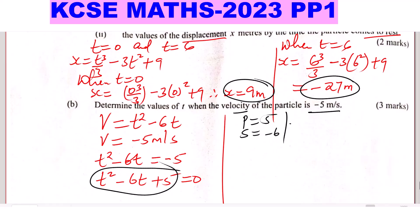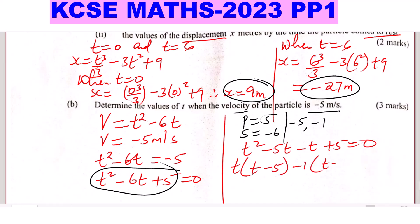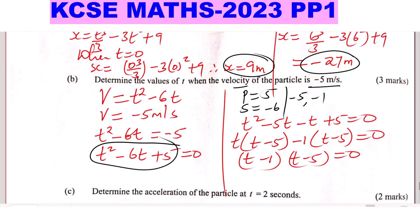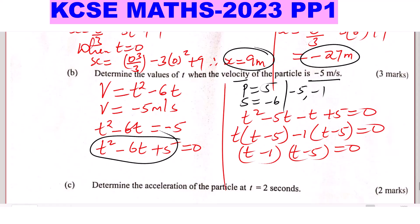Those numbers are negative 5 and negative 1. So t squared minus 6t plus 5 written with those factors: t squared minus 5t minus t plus 5 equals 0. Factor out t to get t(t minus 5) minus 1(t minus 5) equals 0, giving (t minus 1)(t minus 5) equals 0. So t equals 1 or t equals 5.